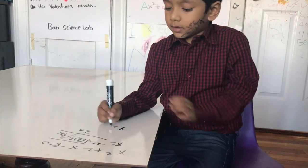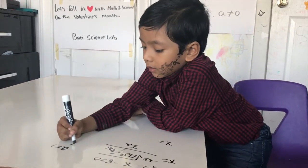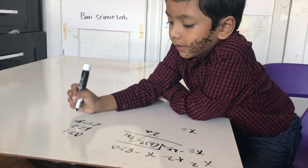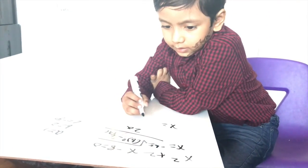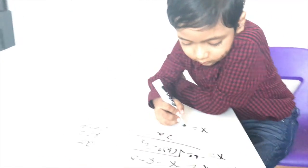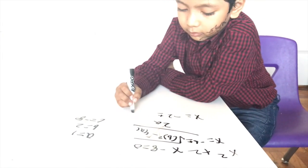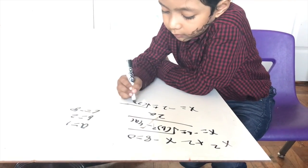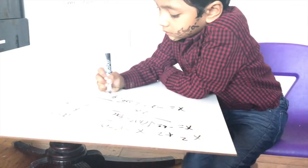So X is equal to... A is equal to 1, B is equal to 2, C is equal to negative 8.